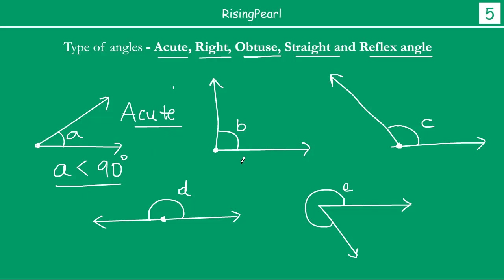Now, if B is exactly equal to 90 degrees — if B is exactly 90 degrees — then this is called a right angle. This arm is at such an angle that it is actually more than 90 degrees. If it were 90 degrees, it would have gone something like this — that is perpendicular.